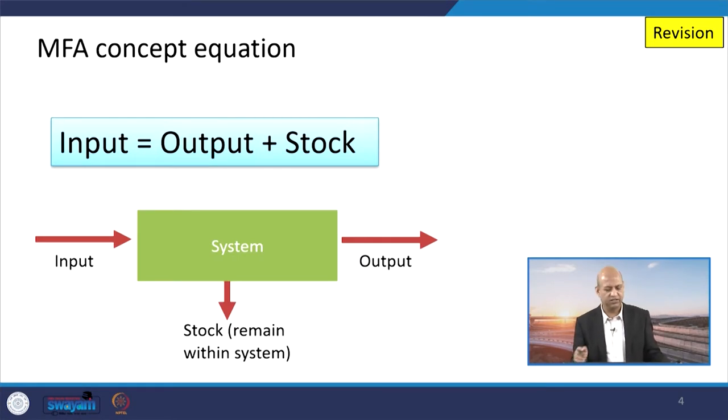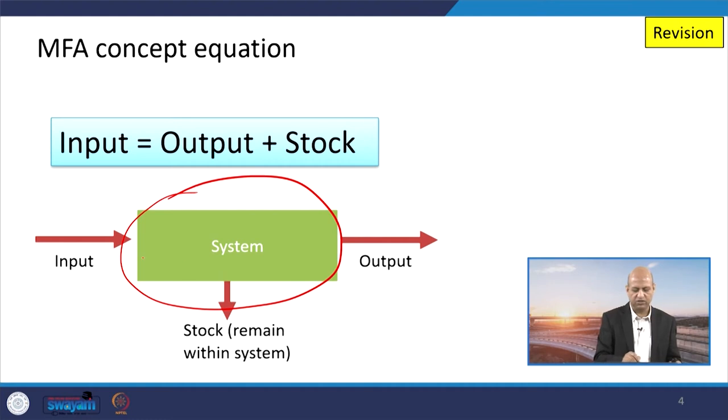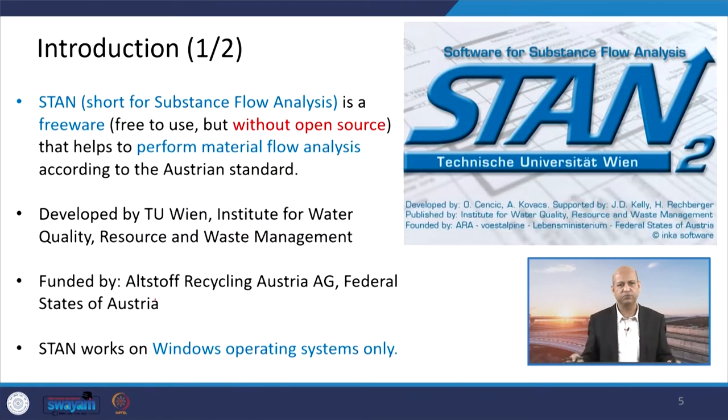You have seen already these simple equations: input equals output plus stock. This is the boundary system and input is coming into the system, stock remains within the system, and output goes out of the system. Basically, output plus stock is the input, so that balance must be there.